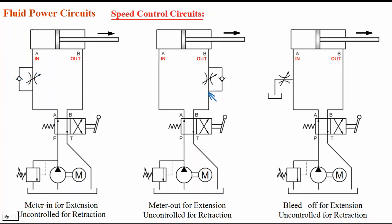In the meter-out circuit, oil coming out of the cylinder during extension flows through the flow control valve; during retraction, oil flows through the check valve — reverse flow is free flow. In the bleed-off circuit, a controlled amount of oil flow is taken back to tank through a bypass line. You can control the rate of flow through this bypass line using the flow control valve, so that only the remaining amount of flow goes to the cylinder.